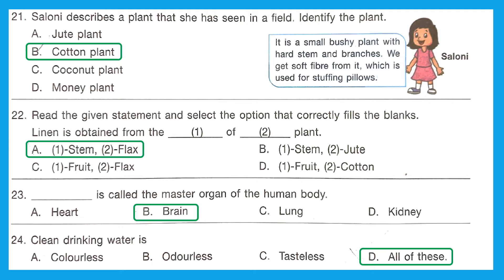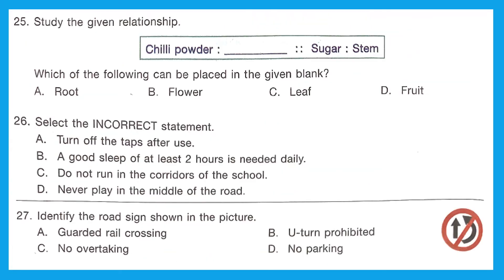Question 25: Study the given relationship — chili powder is related to dash, in the same way sugar is related to stem. Sugar is obtained from sugarcane, which is the stem part. So where does chili powder come from? We get it from the chili fruit. The right answer is option D — fruit.